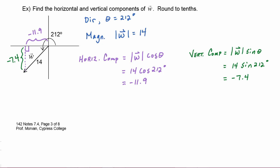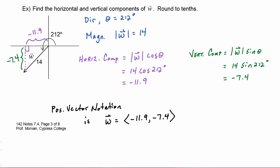Now that we have the horizontal and vertical components, we can write vector w in position vector notation. The problem didn't ask for this, but just so you understand: vector w equals ⟨-11.9, -7.4⟩. That means it starts at the origin, heads into quadrant three, and has terminal point at the point (-11.9, -7.4).